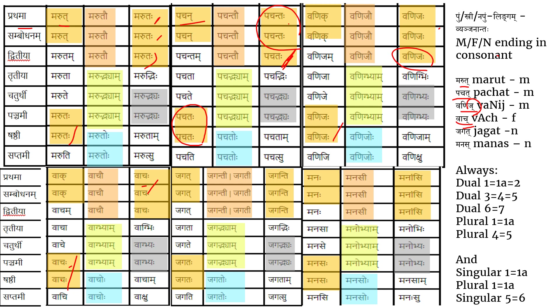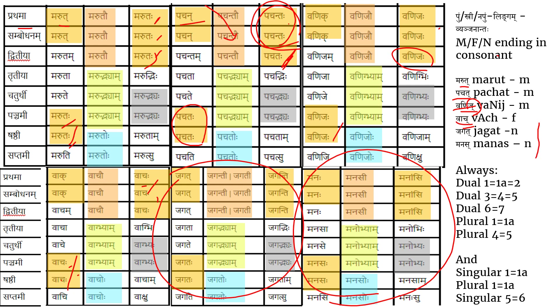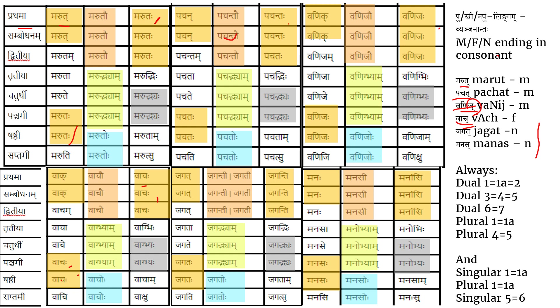The Pachan/Pachat shabda is derived from a dhatu (verbal root), which is why its Prathama Bahuvachanam differs from the others. For the last two neuter tables — Jagat and Manas — as they are Napusakalinga, Prathama and Dvitiya Vibhakti are always the same in all numbers. All other global patterns also apply to these consonant-ending neuter nouns.